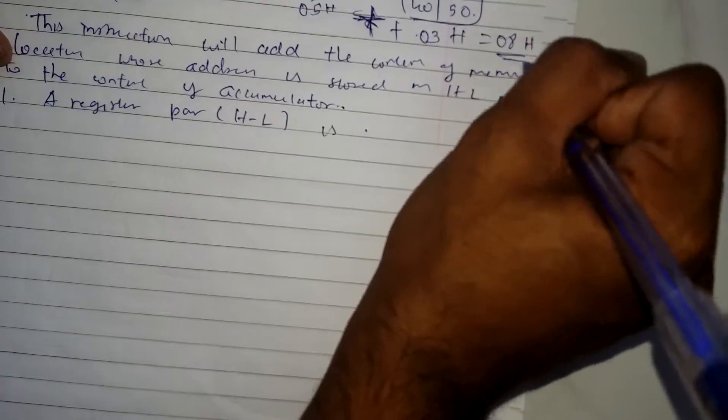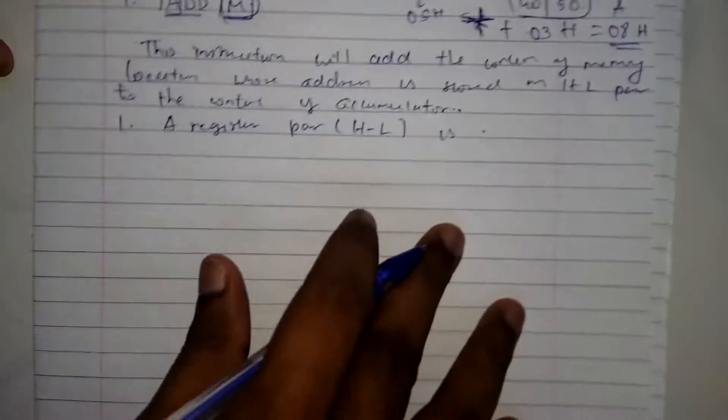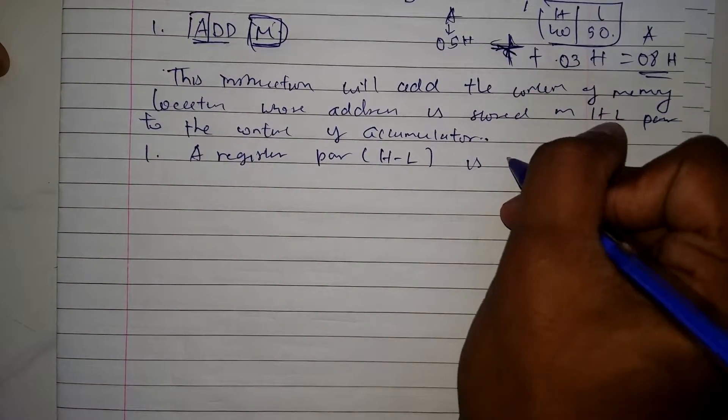These two will be added and the answer will be stored in the accumulator, of course. Now the register pair HL is specified for